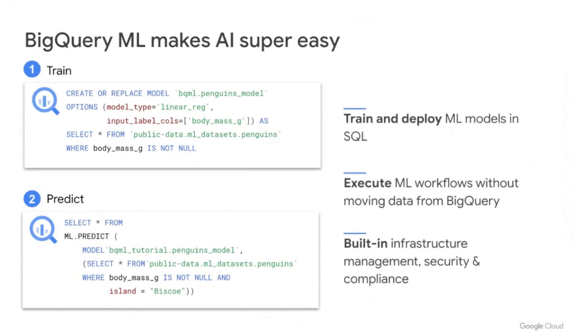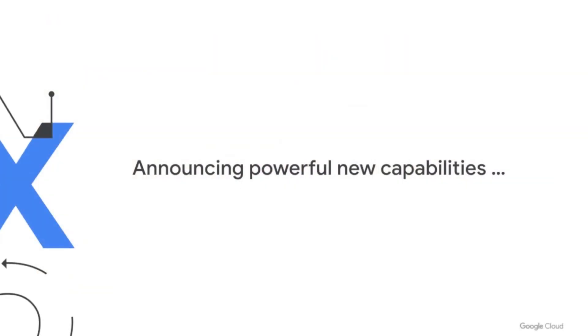In summary, BigQuery ML brings real value: you do not have to look for advanced ML skills like Python and R — SQL is a much wider known language, and users can use that to do ML. You can execute all your ML workflows without moving data from BigQuery, because every AI problem becomes a data problem. And BigQuery takes advantage of the massive scale of Google's compute and storage infrastructure so you don't have to think about what infrastructure you need. This is stuff we've been doing since 2018, and now we're going to launch a whole bunch of new capabilities.